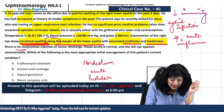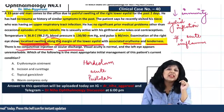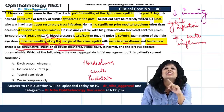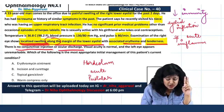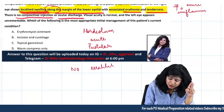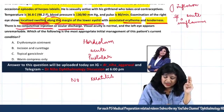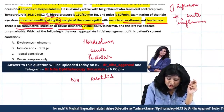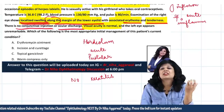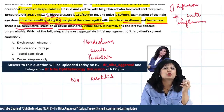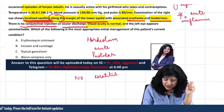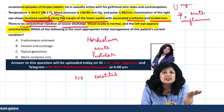There is no conjunctival injection or discharge. This is given so you don't confuse this with keratitis — there is no discharge, no conjunctival injection, so no keratitis. The visual acuity of this patient is normal, which rules out other causes of acute red eye like uveitis or keratitis, as those patients present with diminution of vision. The left eye appears unremarkable.